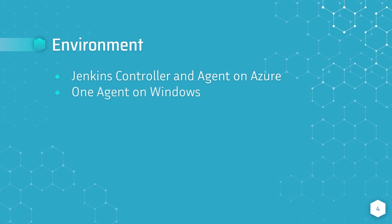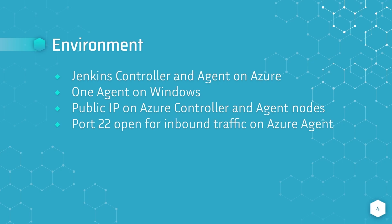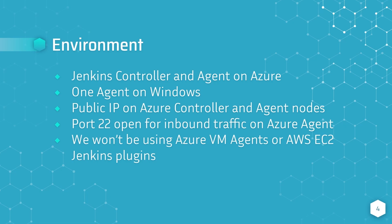The Jenkins controller and Jenkins agent nodes hosted in Azure both have public IPs, and port 22 is open for inbound traffic on the Azure agent. One thing I'd like to point out is that we won't be using the Azure VM Agents or AWS EC2 Jenkins plugins. These plugins allow you to dynamically provision agents in the cloud, and they are very useful. But the method I'm going to show should be cloud agnostic and can be applied in an on-premise environment or without a cloud account. You could even set this up to run entirely on a single machine.